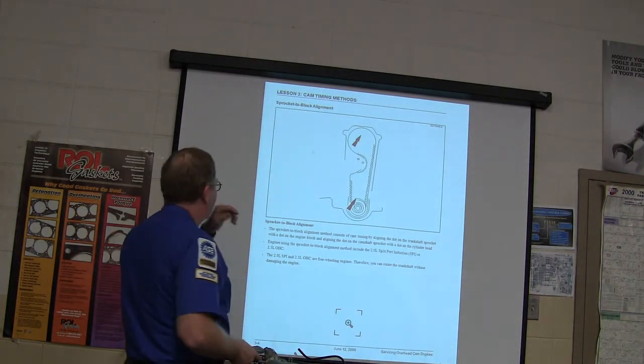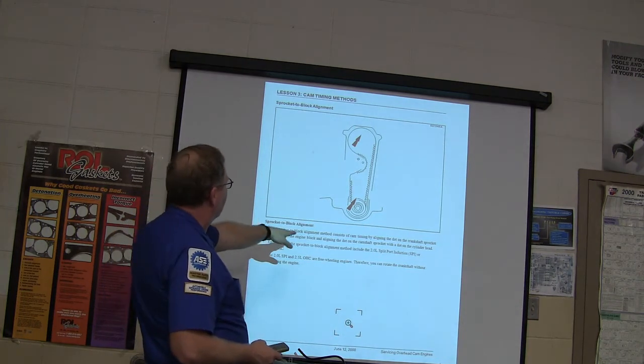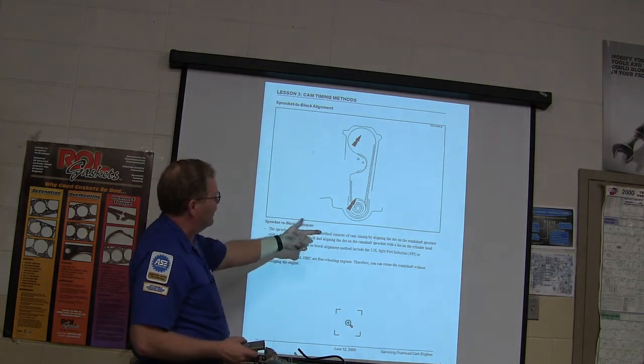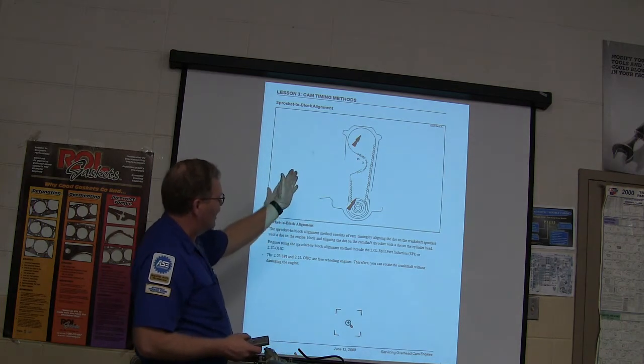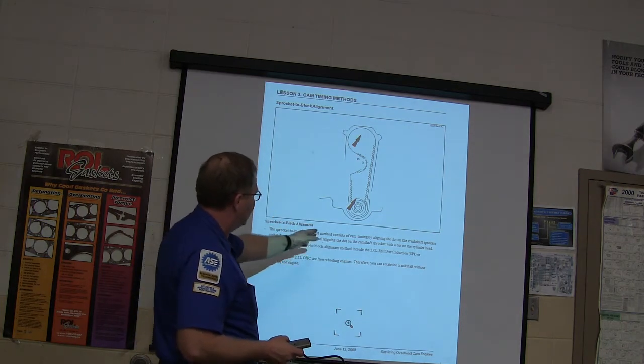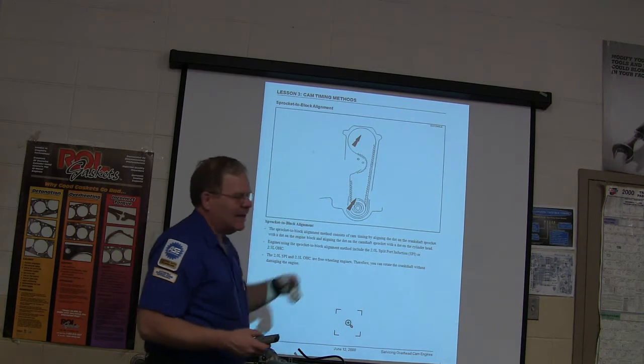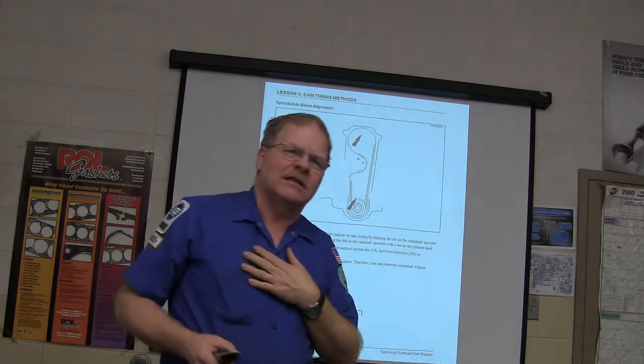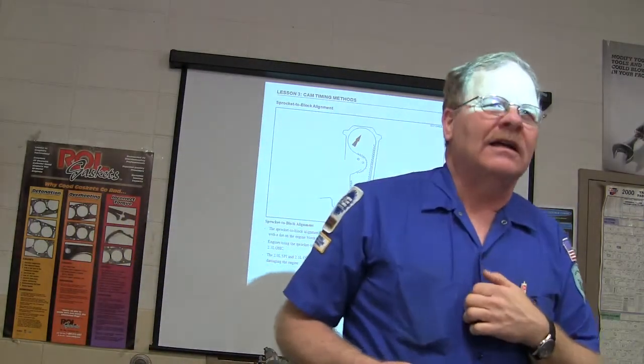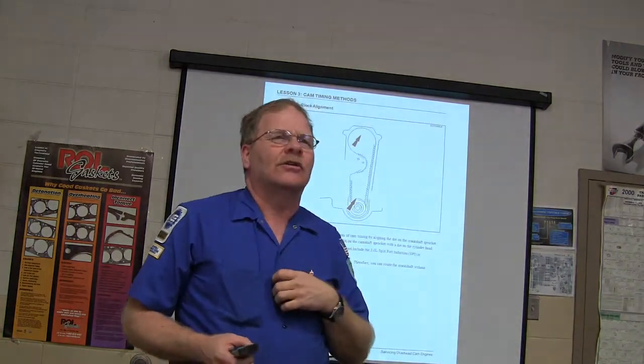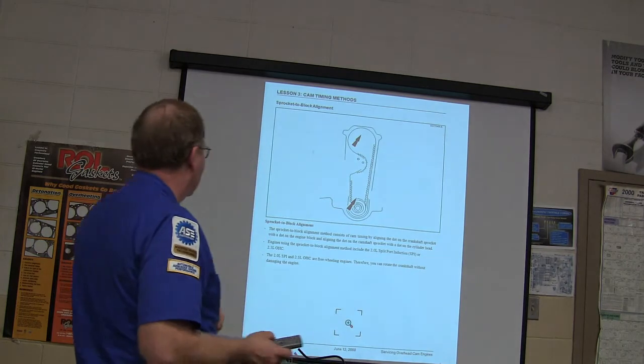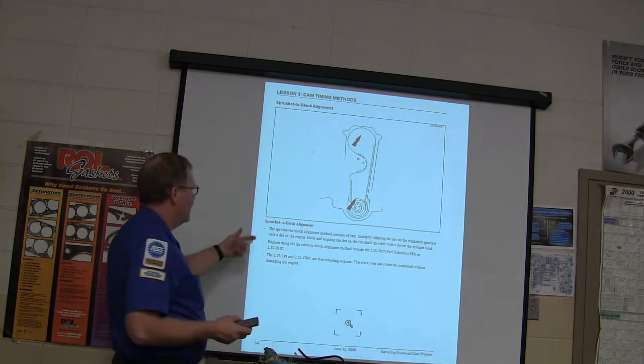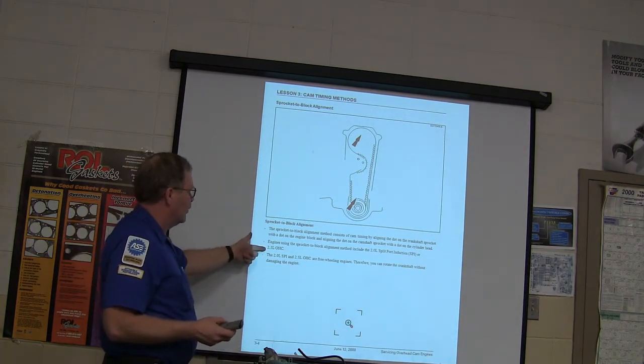And here's another one. Sprocket to block alignment. The sprocket to block alignment consists of cam timing by lining the dot on the camshaft crankshaft sprocket with a dot on the engine block and lining the dot on the camshaft. See, both of them have got dots they line up with. You've got to find out what yours is. You can't just wing it. When you're putting together one of these trainer engines out here, don't just cram it together just so it'll look good and walk away from it. You've got to learn how to time it the right way.